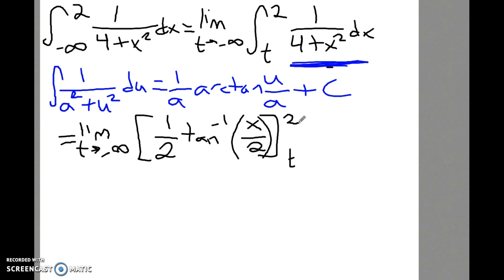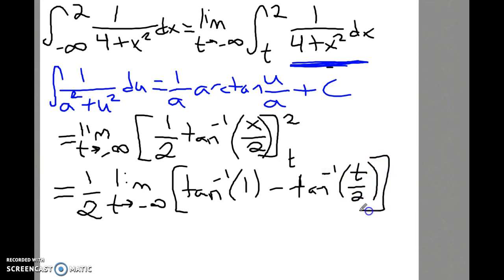I would bump that 1 half out in front of the limit. I like to bump those constant multiples outside. And then we've got the limit as t approaches negative infinity of inverse tangent of 2 over 2, which is inverse tangent of 1, minus inverse tangent of t over 2.